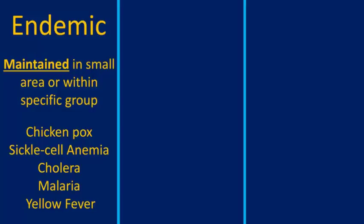Examples of specific groups: who's most likely to get chicken pox? Kids. If you grew up in the United States, there's a good chance you're going to get chicken pox sometime during your elementary years. African Americans very commonly get sickle cell anemia, so that's an example of an endemic disease within a specific group of the population.